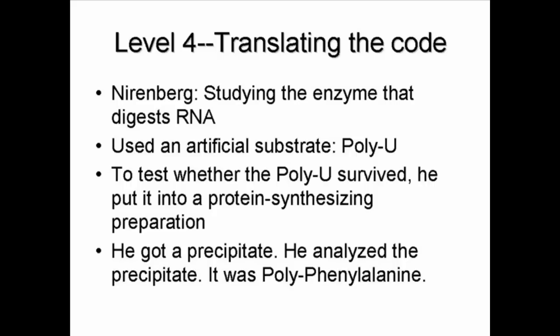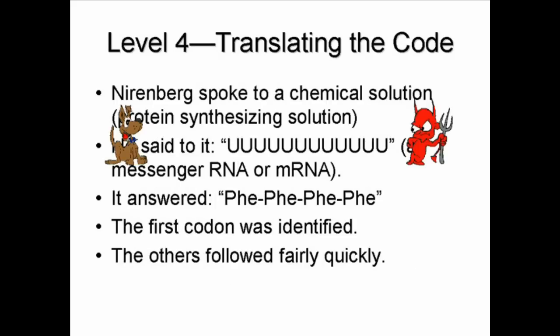Most people would have just discarded the precipitate with a few choice obscenities and gone back to try something else, but not Nirenberg and Matthaei. They decided to analyze it. When they realized they had polyphenylalanine, they understood they had done something really special. Nirenberg had actually spoken to a chemical and it had answered him. He had taken his artificial substrate poly-U and said to the protein-synthesizing solution: U-U-U, U-U-U, U-U-U. And the chemical solution had looked right back and said, 'Of course I know that — phenylalanine, phenylalanine, phenylalanine.'